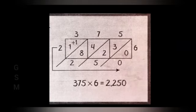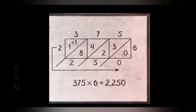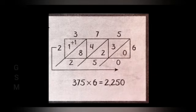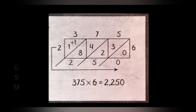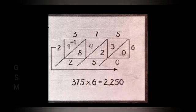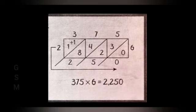So how do you add this? First zero, next you have to add diagonal shape, so 3 plus 2 is 5. 8 plus 4 is 12, so you have to write 2 alone. Next, 2 remaining is carried over to the next one. So 1 plus 1 plus 1 is 2. So what is the answer? 2,250.